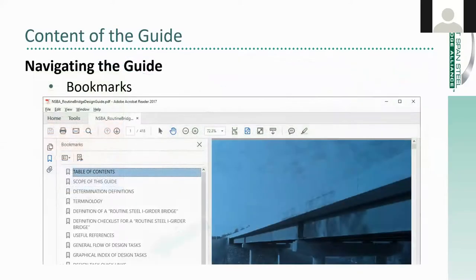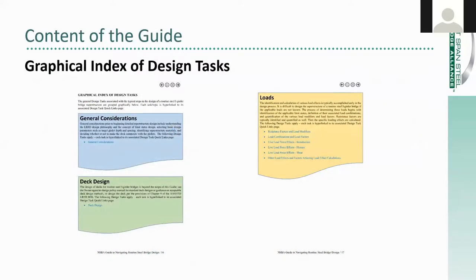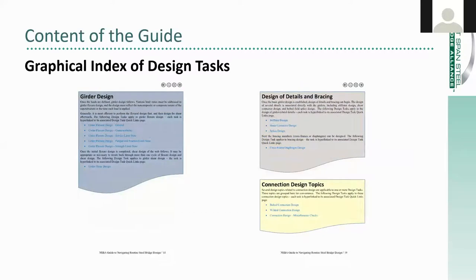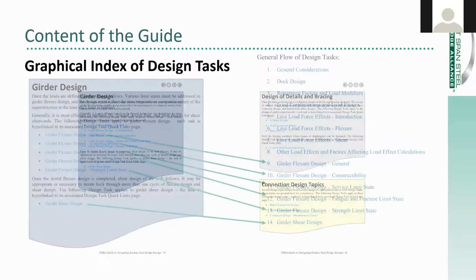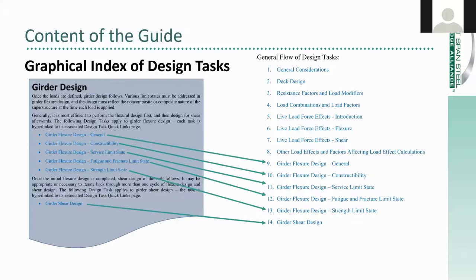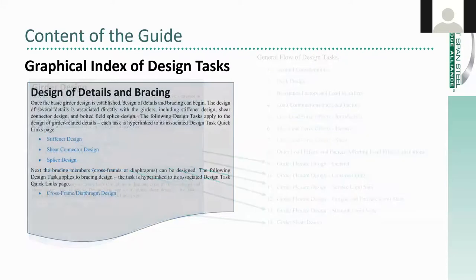That was one way through, starting with the general flow of design tasks. If you prefer, you can use the graphical index of design tasks. The graphical index is comprised of four pages, each with one or two major design tasks in a colored box. The major groupings include general considerations, deck design, loads, girder design, design of details and bracing, and connection design topics. The blue hyperlinks match the hyperlinks on the general flow of design tasks page — there's a one-to-one correspondence. From the graphical index, if you click a given hyperlink to a specific design task, it takes you to the page with the green, orange, and blue boxes.